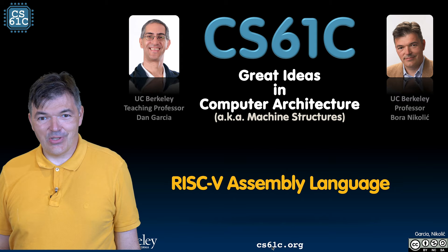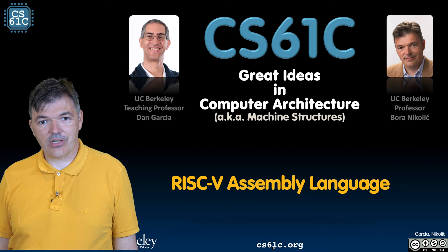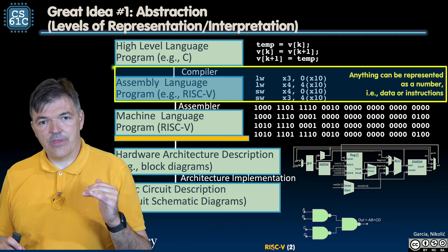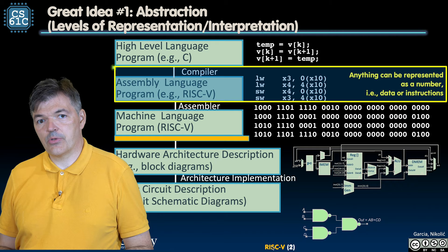Welcome to the next module in 61C. We are going to dive down to the next level of abstraction and cover the RISC-V instruction set architecture and the RISC-V assembly language. Remember early in the class we talked about the ideas of layering different layers of abstraction to represent complex compute systems.